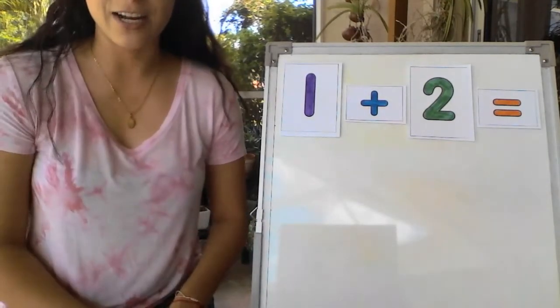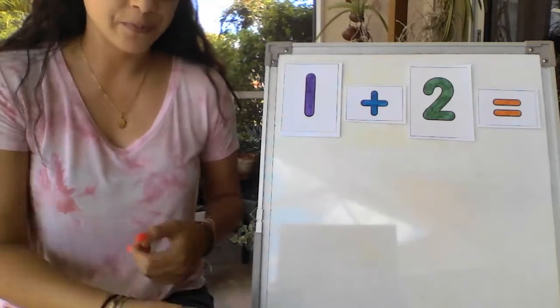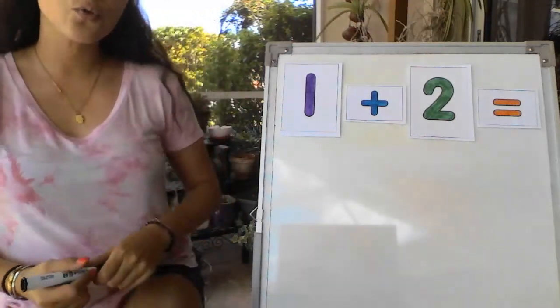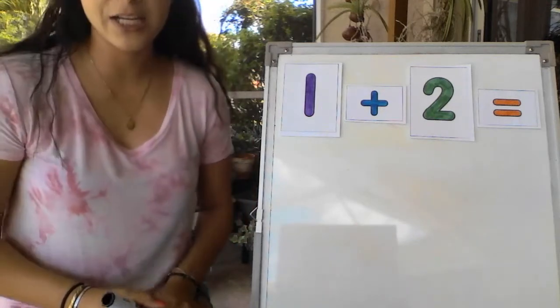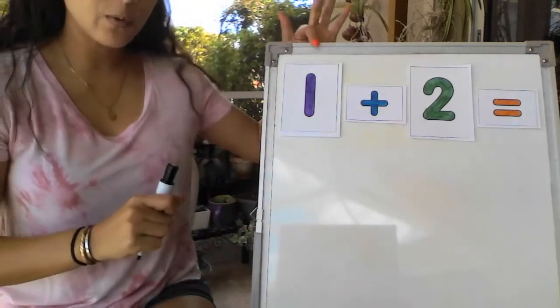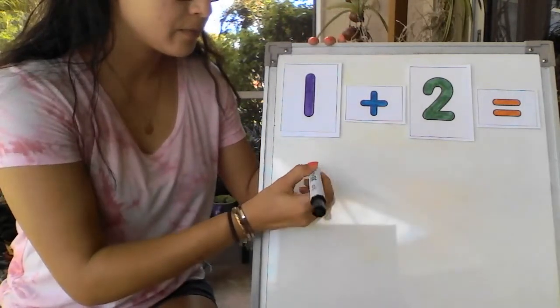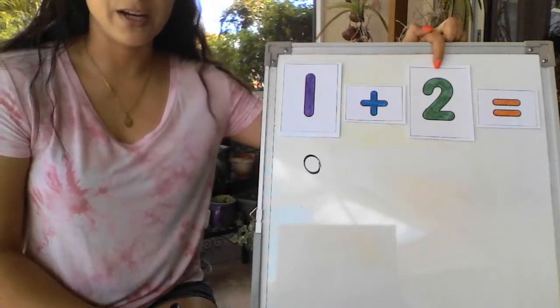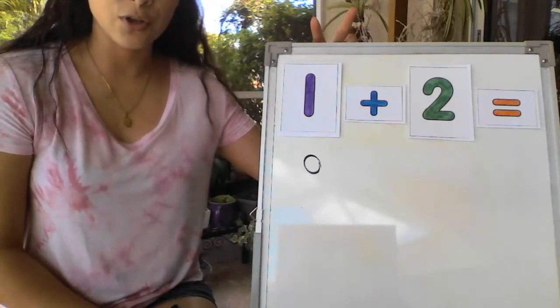Here's the next strategy. You can use your marker. When you see the number you're going to draw little circles underneath it that represents that same number. So if I have the number 1 here I'm going to draw one circle. If I have the number 2 here I'm going to draw two circles.